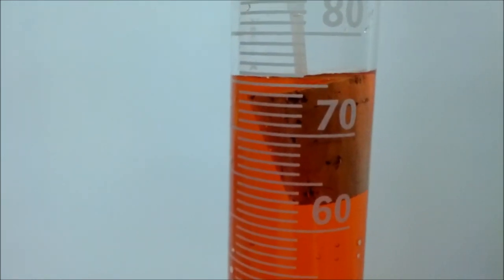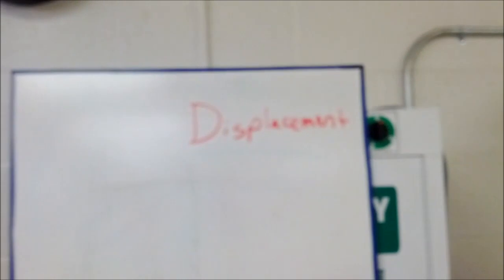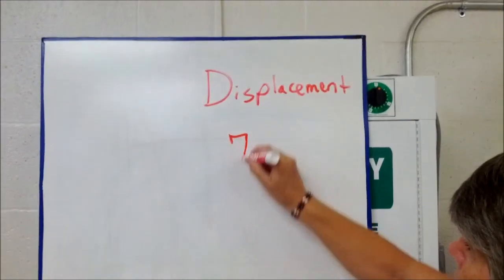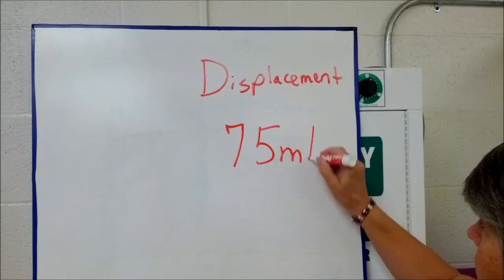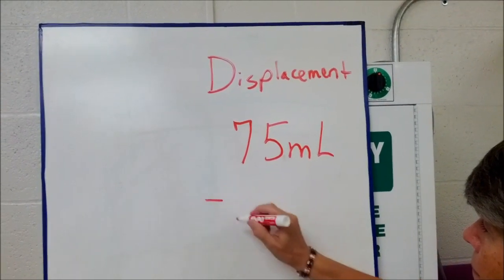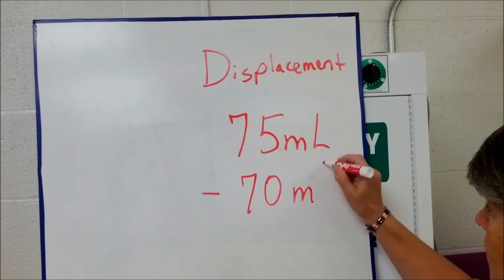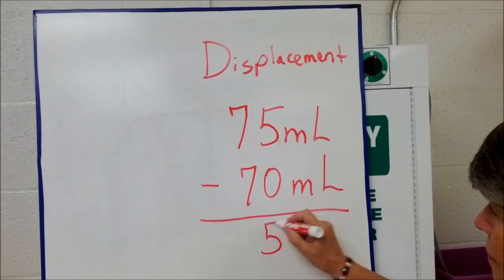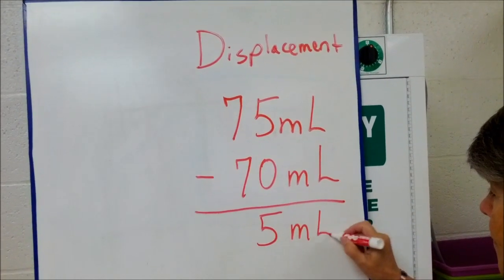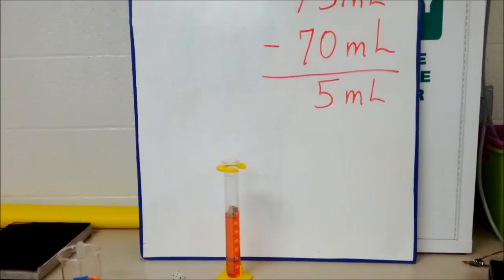Wouldn't y'all agree? 75 milliliters? Okay, so now let's do our math. We started with 75 milliliters after we push the cork down in, and we started with 70 milliliters. So we subtract and our cork has a volume of 5 milliliters. And that's how you find the volume of an object that floats in the water.